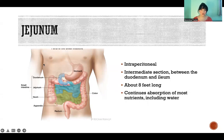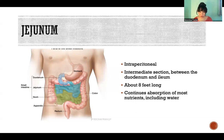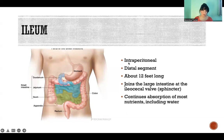Then we get to the jejunum. That is our intermediate section — it's between the duodenum and the ileum. It is intraperitoneal and about eight feet long. Here we continue absorption of all those nutrients just mentioned, and we also start absorbing water in this segment.